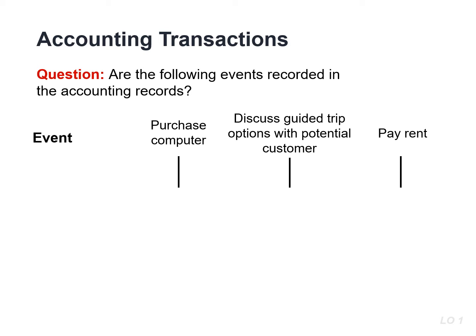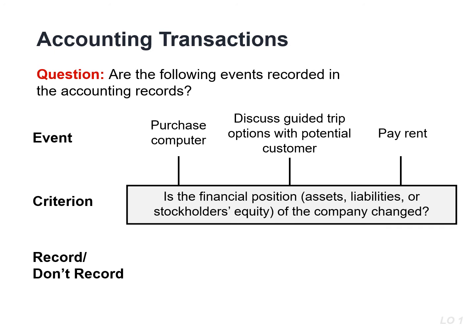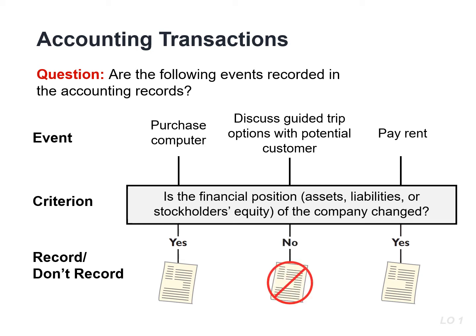We call economic events that require recording in the financial statements accounting transactions. But remember, not all events are recorded and reported in the financial statements. This slide summarizes the decision process companies use to decide whether or not to record economic events. An accounting transaction occurs when assets, liabilities, or stockholders' equity items change as a result of some economic event. The purchase of a computer by General Motors and the payment of rent by Microsoft are examples of events that change a company's assets, liabilities, or stockholders' equity. Having a conversation with a potential customer is not an economic event that requires recording.